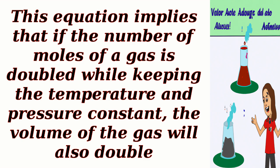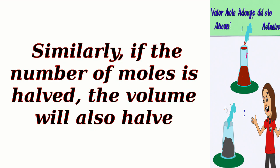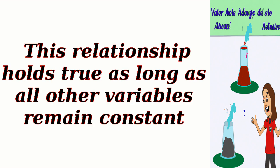This equation implies that if the number of moles of a gas is doubled while keeping the temperature and pressure constant, the volume of the gas will also double. Similarly, if the number of moles is halved, the volume will also halve. This relationship holds true as long as all other variables remain constant.